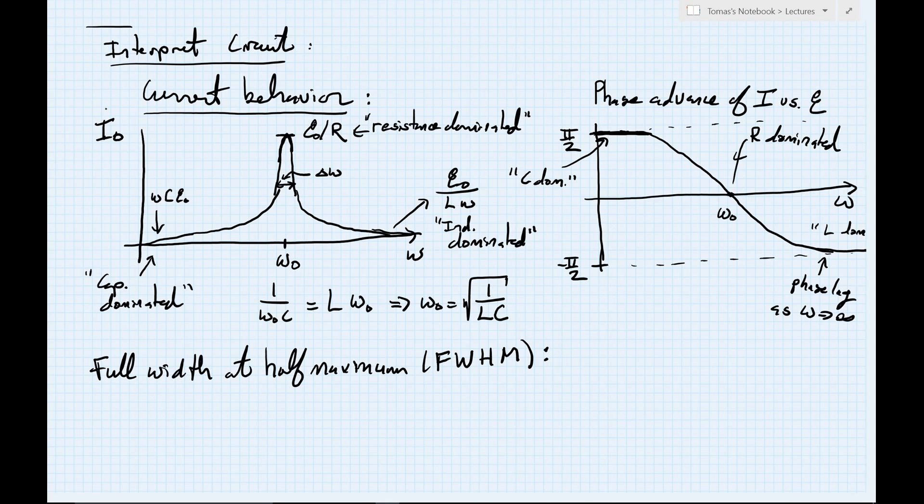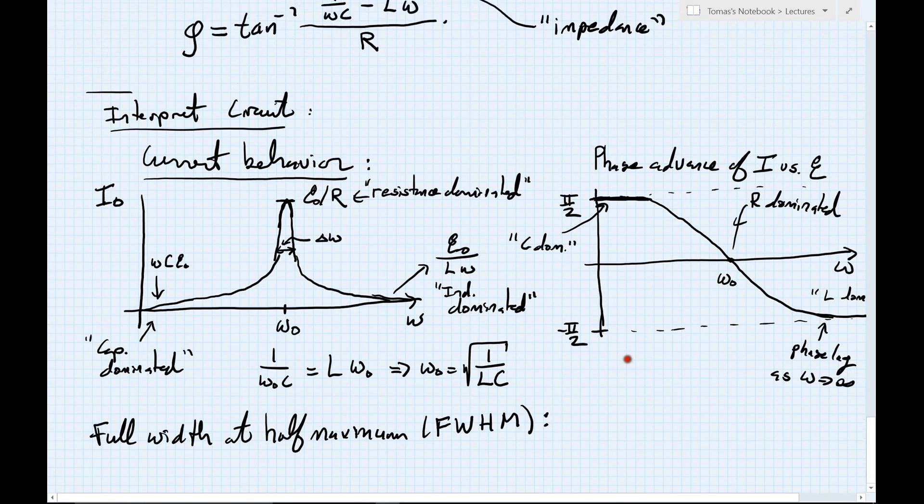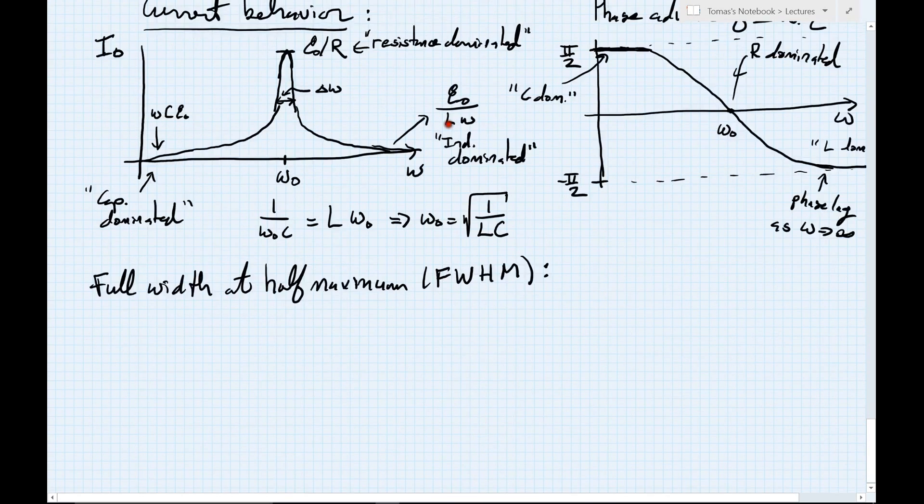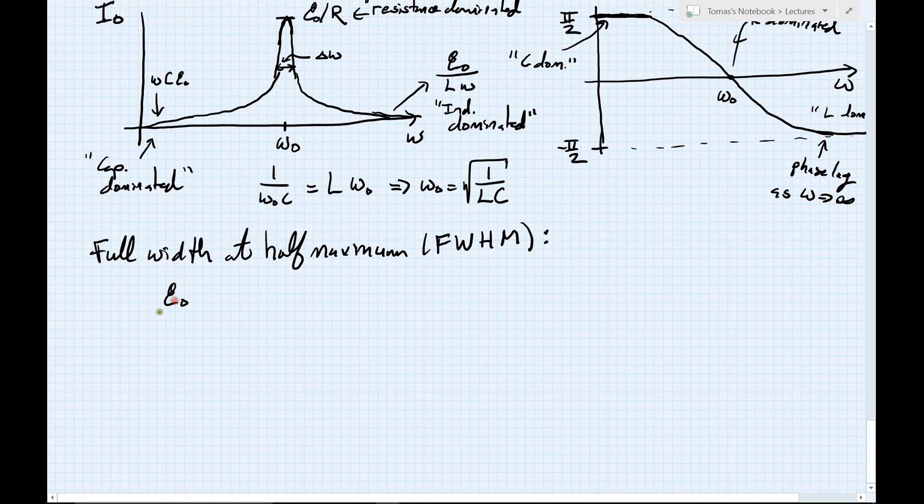So to determine that full width at half maximum, I need the condition where my peak has exactly half of its maximum value. Its maximum value, remember, was e0 over r. So I have e0 over 2r as the value I'm looking for. And I'm seeking that value when I'm at a frequency. And here's e0 over the square root of r squared plus (1 over omega c minus l omega) quantity squared.